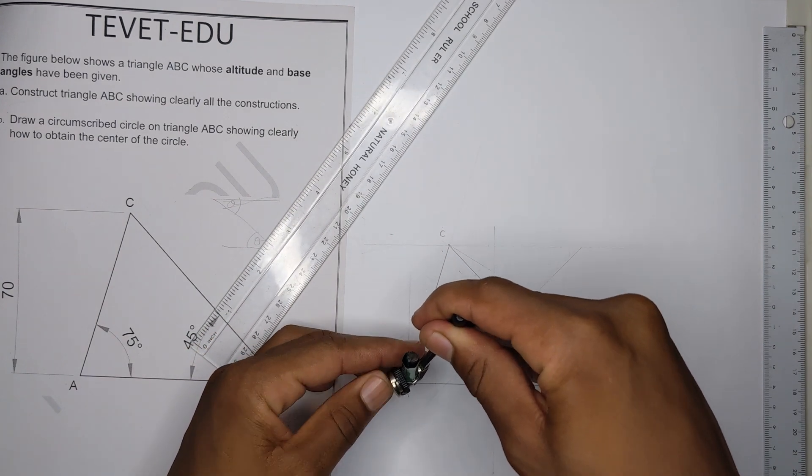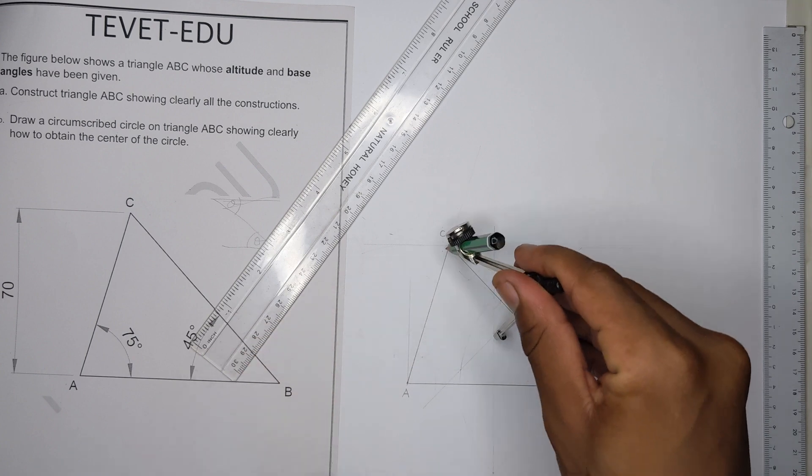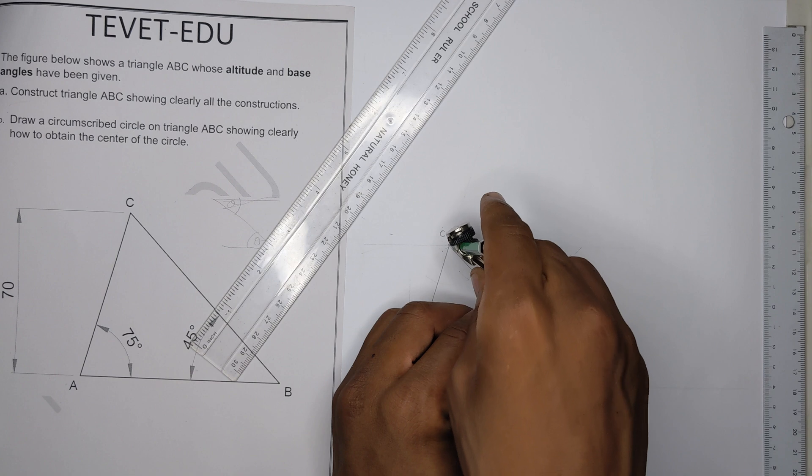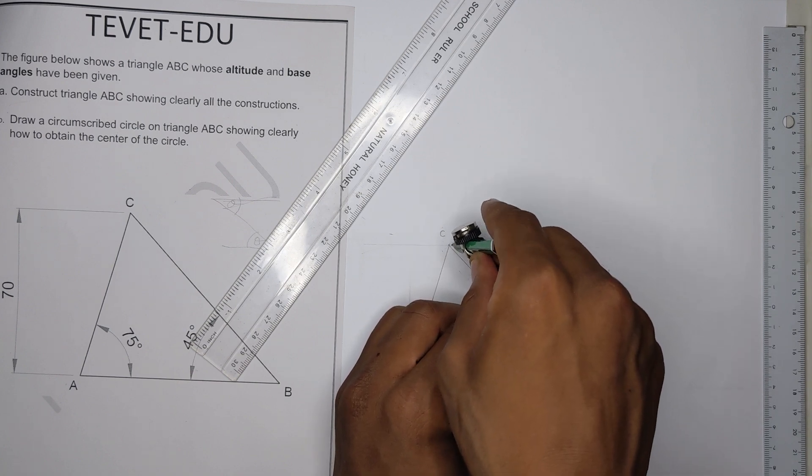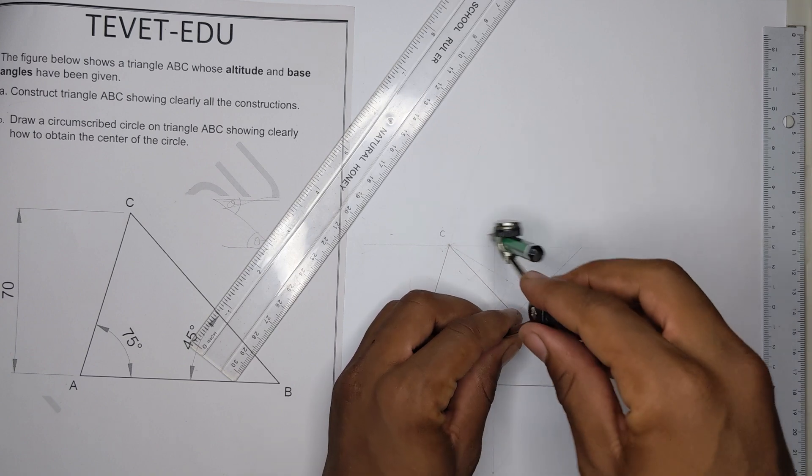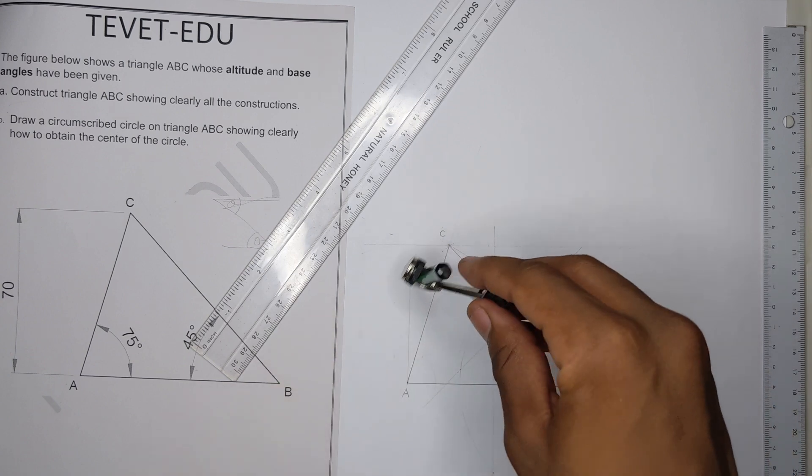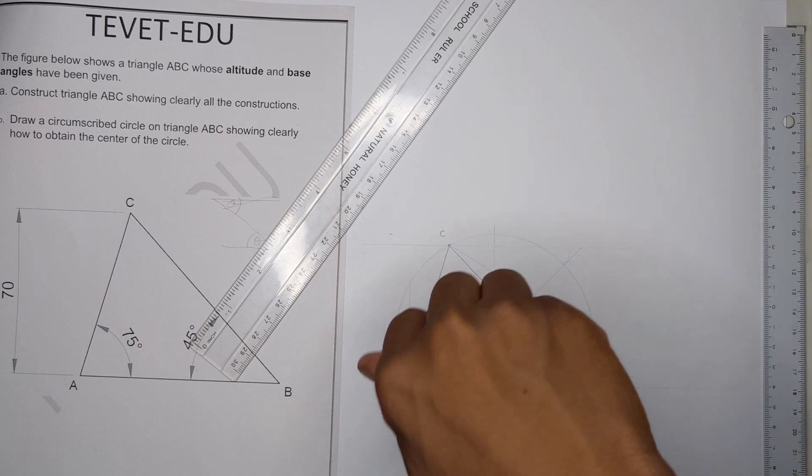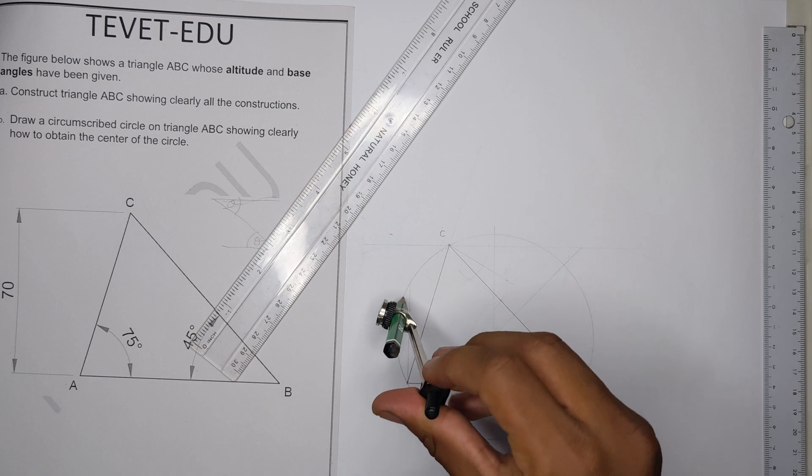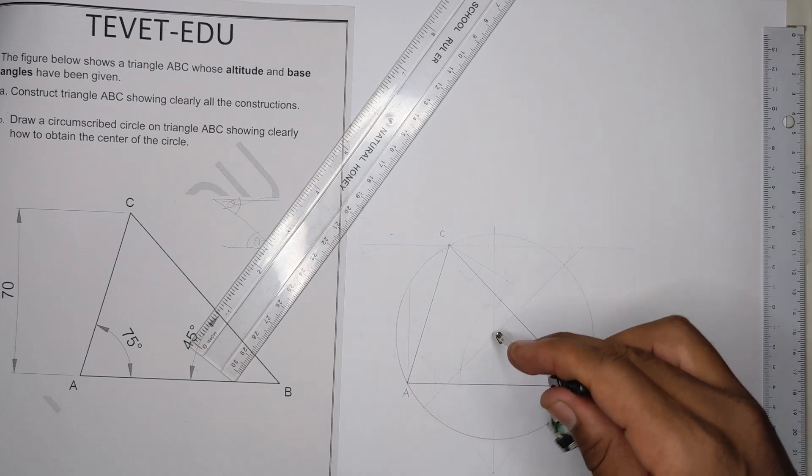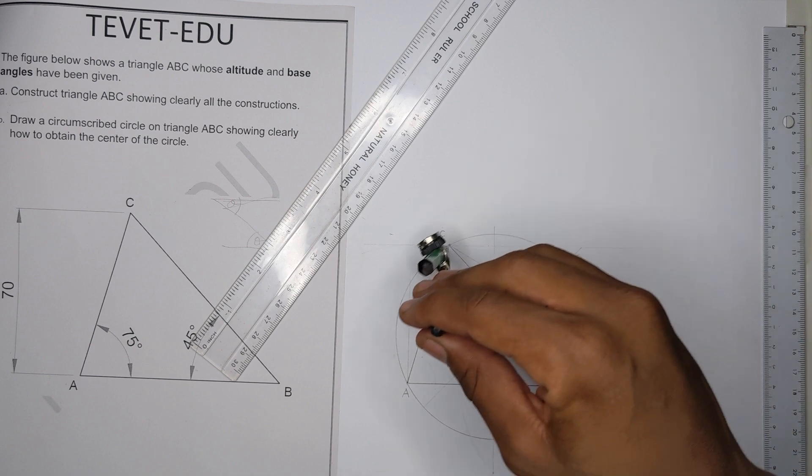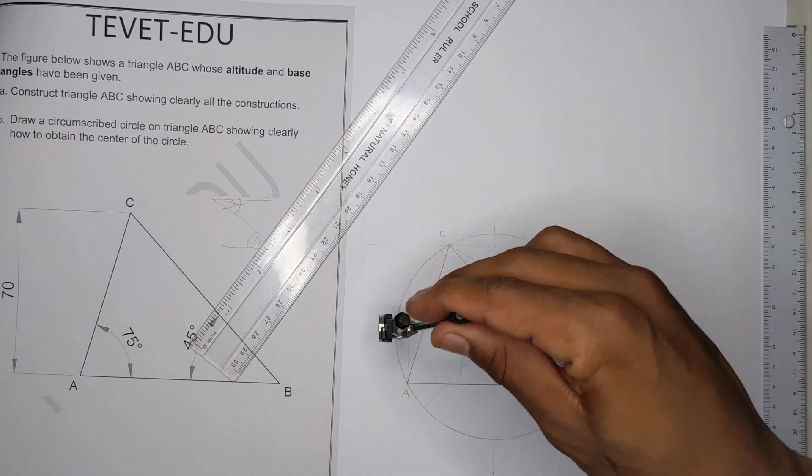So you just get your compass, place it there, and open to one of the corners. And we should be able to draw.